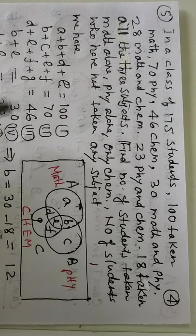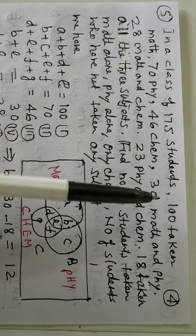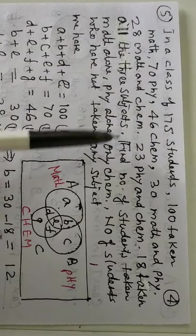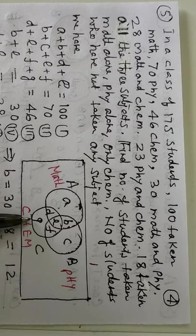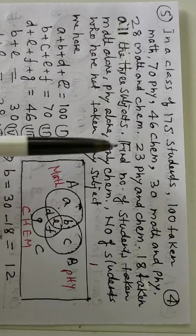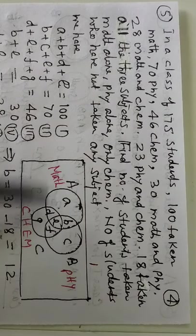Now, this is for three sets. Remember it. There are three subjects. Mathematics, Physics and Chemistry. A, B, C are denoting math, physics, chemistry. Write A, B, C, D, E, F, G at proper place. Now, according to question, 100 taken math. Means A, B, D, E. A, B, D, E, 100.